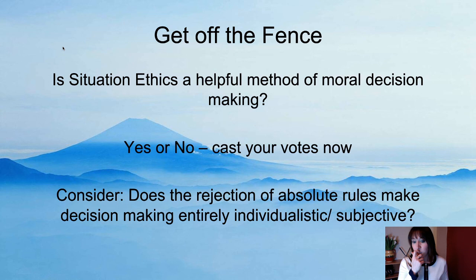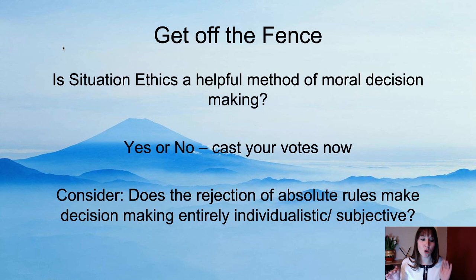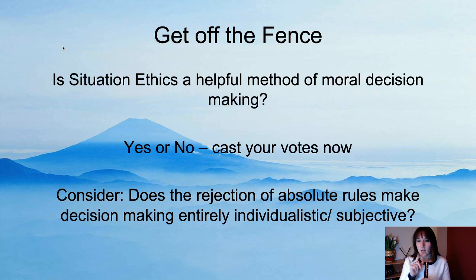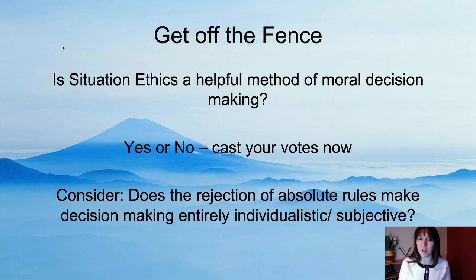Finally, you need to get off the fence. Do you think this argument is helpful? Does it work — yes or no? Does the rejection of absolute rules make decision-making just too individualistic, or do you think ethics should be individualistic? That's your next theory done. You shouldn't find it too difficult — if you've got questions, chances are it's because you're thinking evaluatively about things that are a weakness of the theory rather than a lack of your understanding.